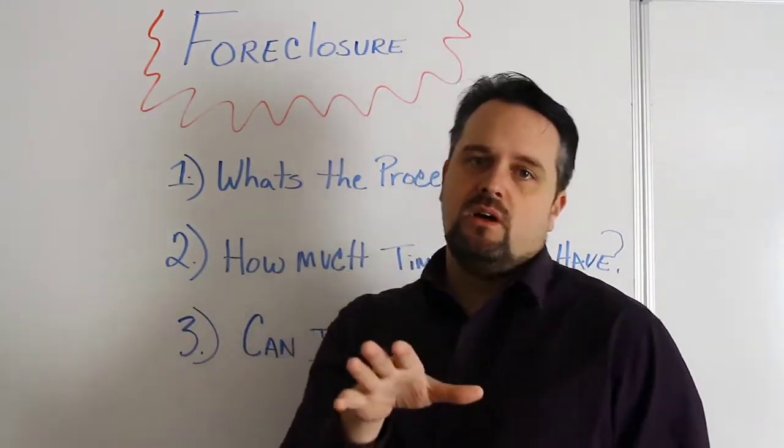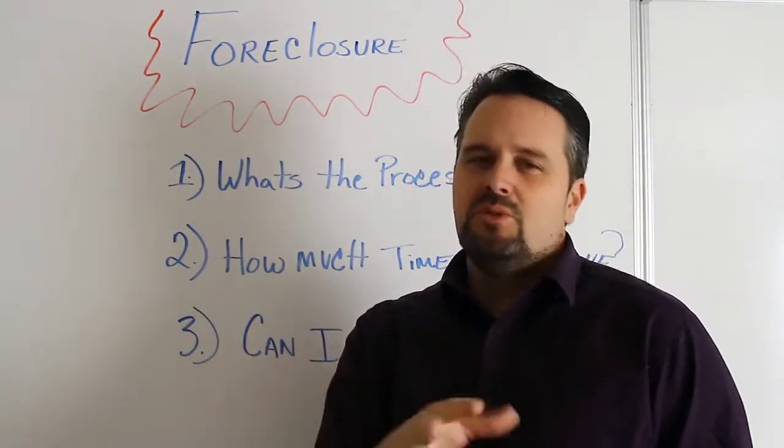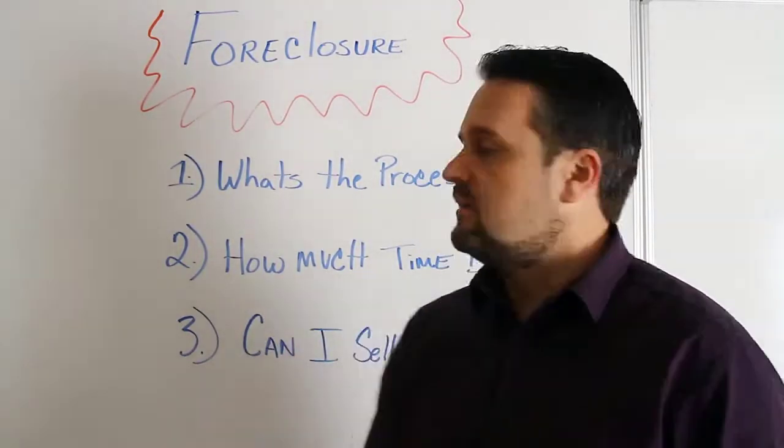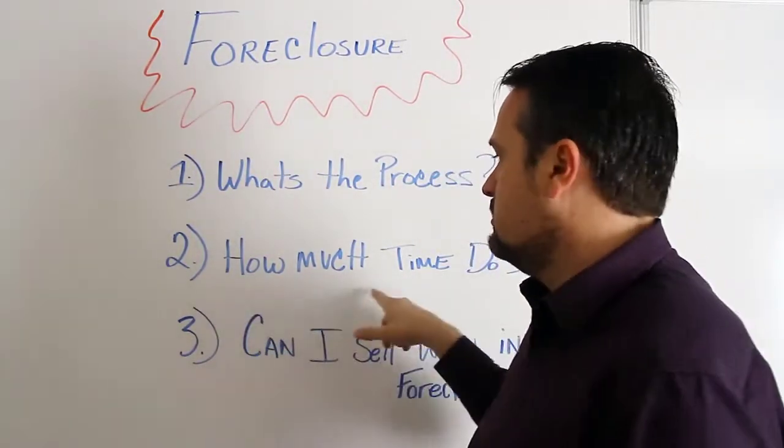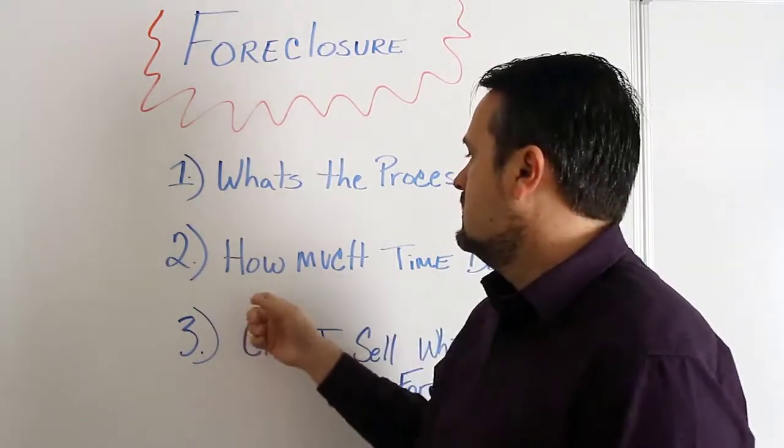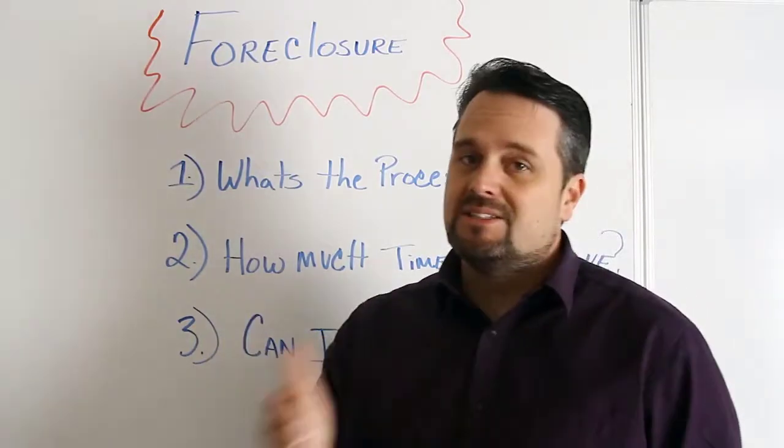How much time you have depends on your bank and their ratios of foreclosures. They can foreclose on you as soon as two and a half to three months. That's as soon as they can do it. But most of the time, you're going to have three to five, six months. The hard money guys are going to do it a lot faster.